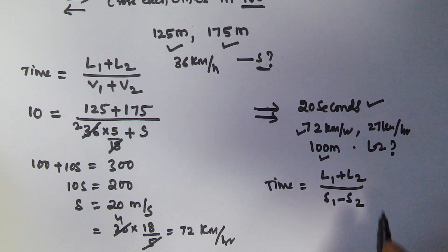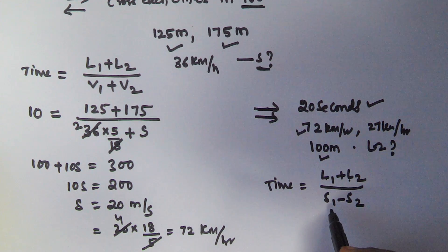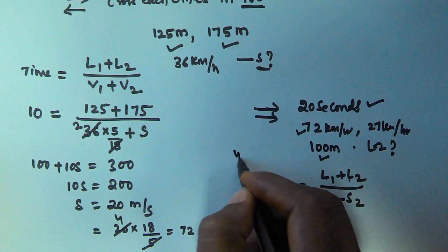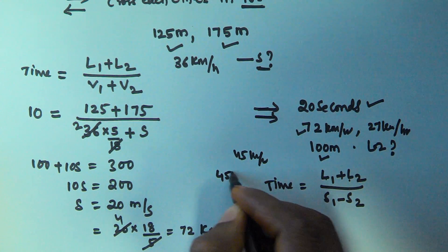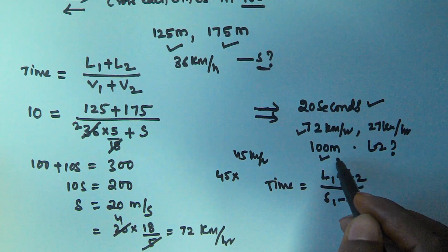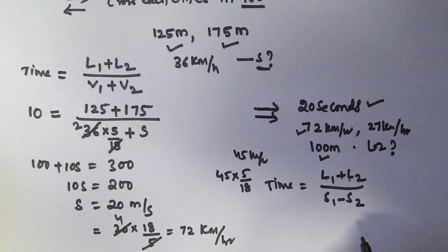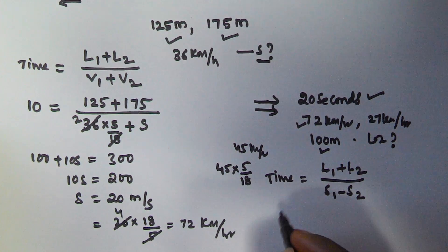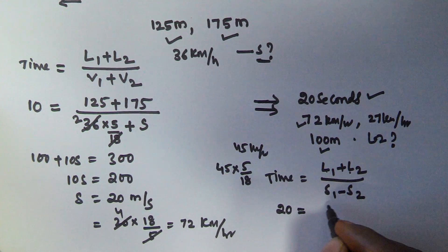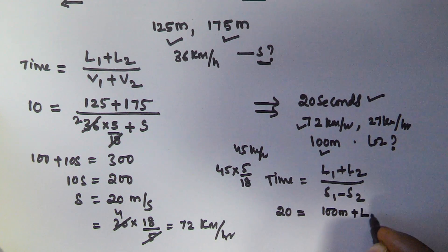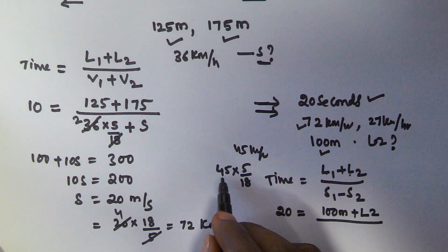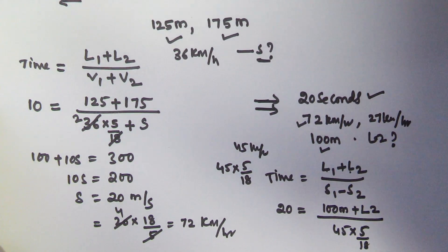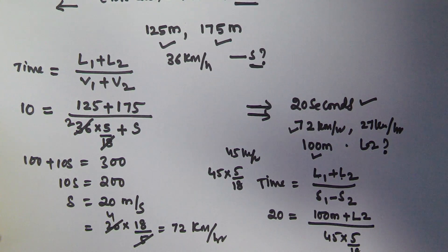We have L1 = 100 meters, L2 is unknown, S1 = 72 km/h and S2 = 27 km/h, so S1 minus S2 equals 45 kilometers per hour. We convert this into meters per second by multiplying by 5/18, giving 45 × (5/18) meters per second. Time is 20 seconds, so: 20 = (100 + L2) / (45 × 5/18).